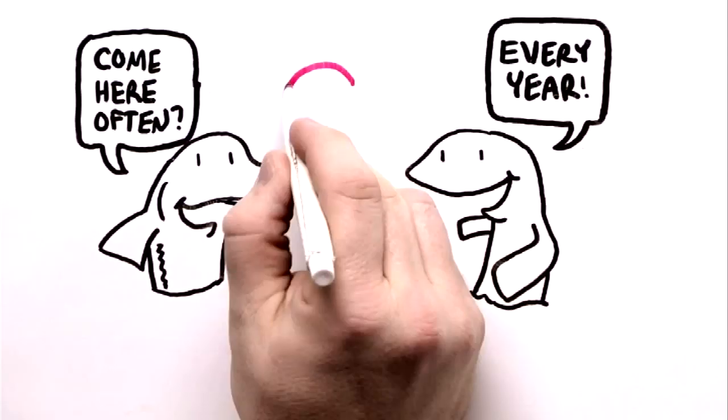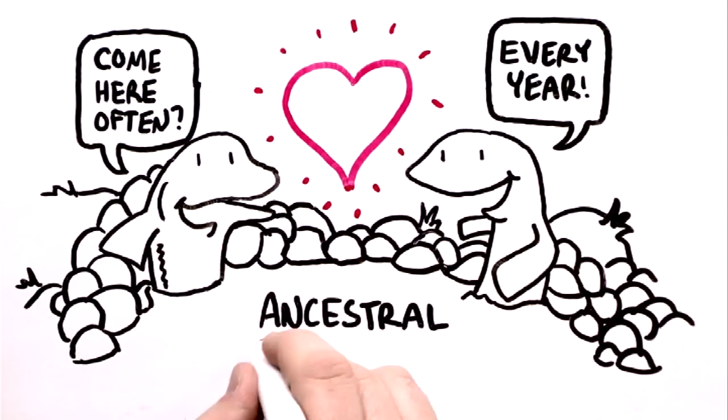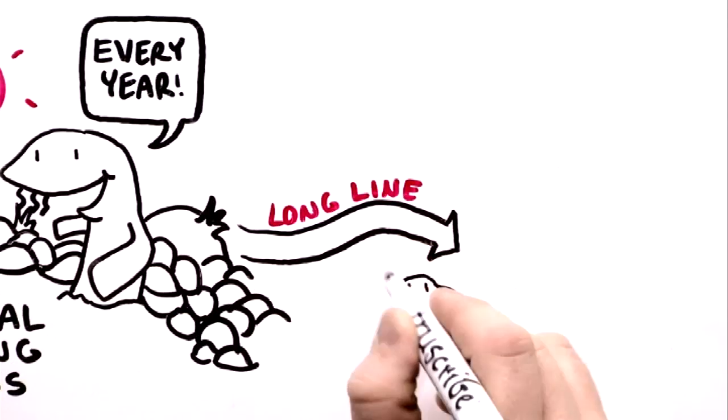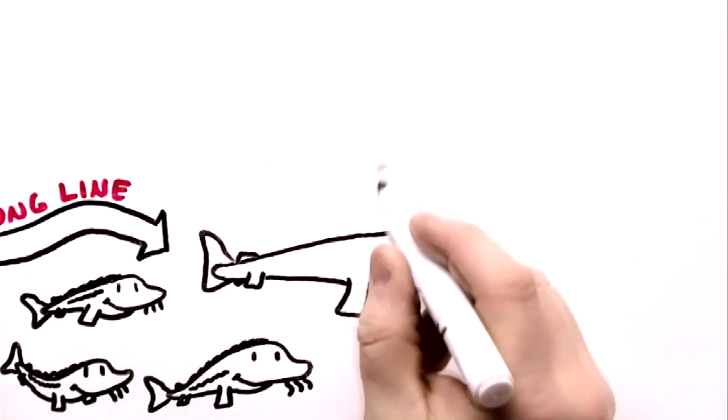Once at their destination, they can finally find love in their ancestral spawning grounds, making more baby sturgeon that will continue the long line of this ancient fish.